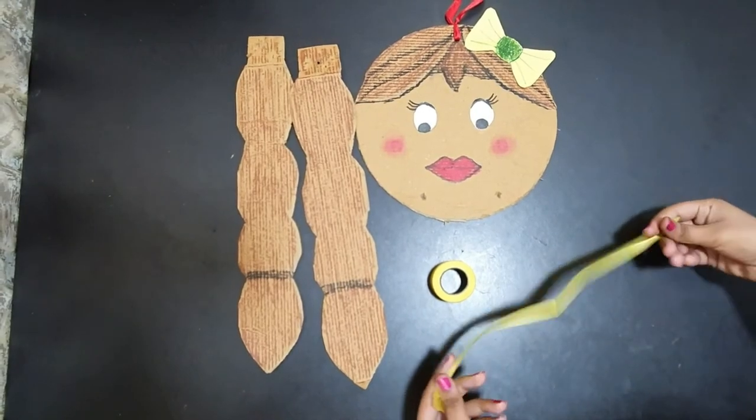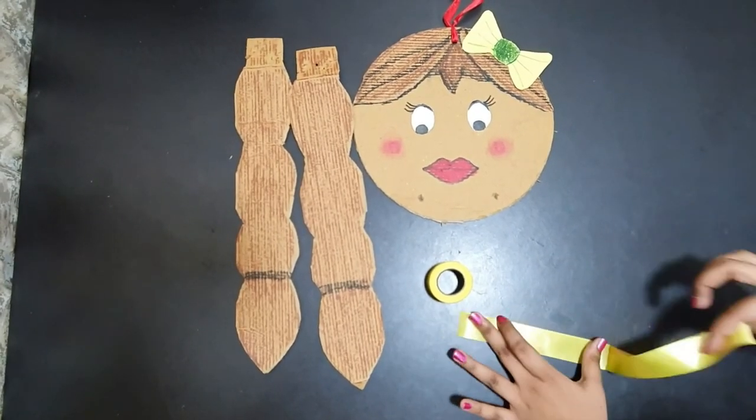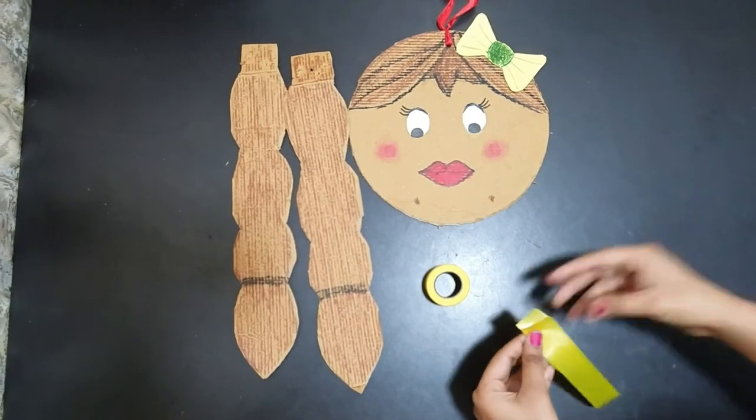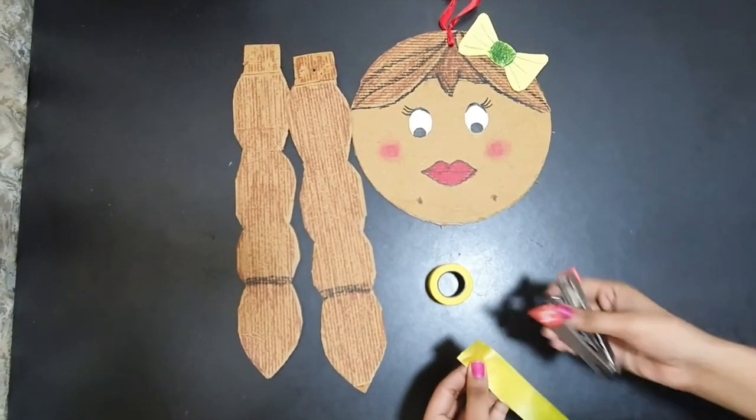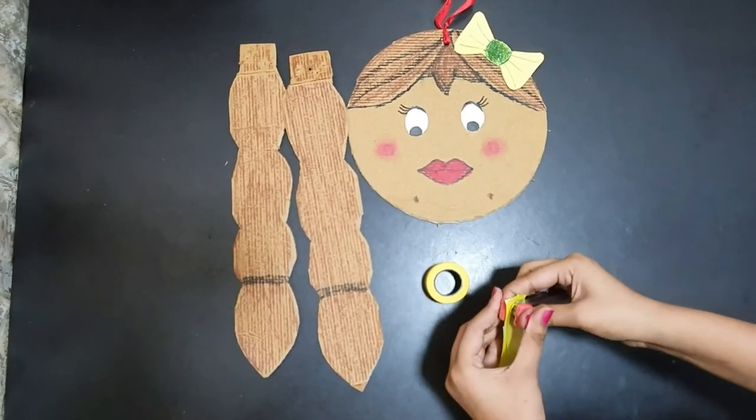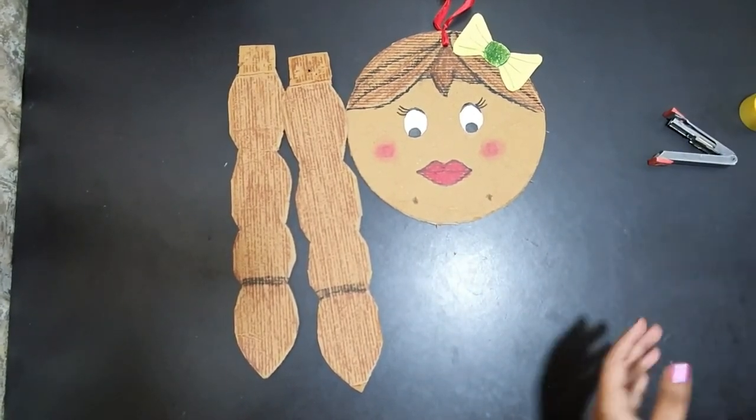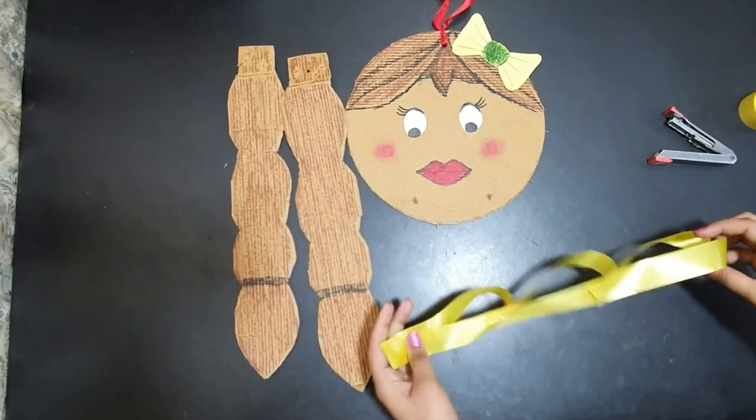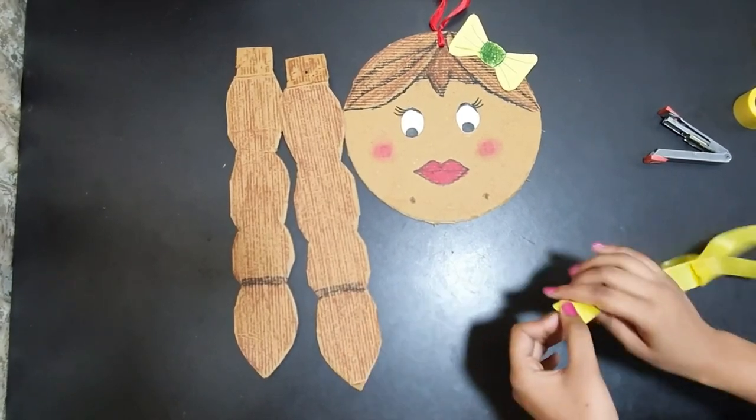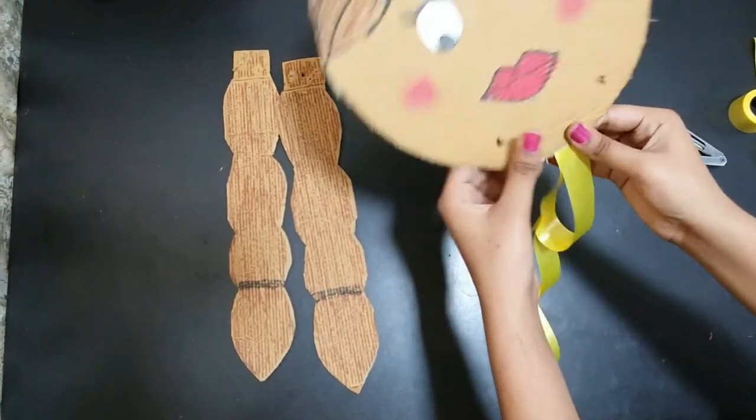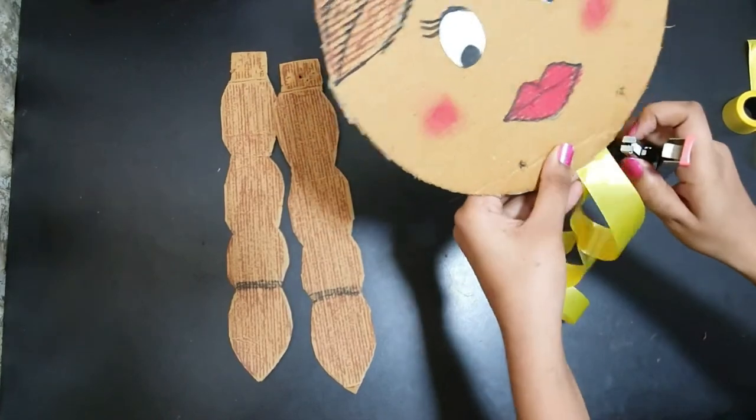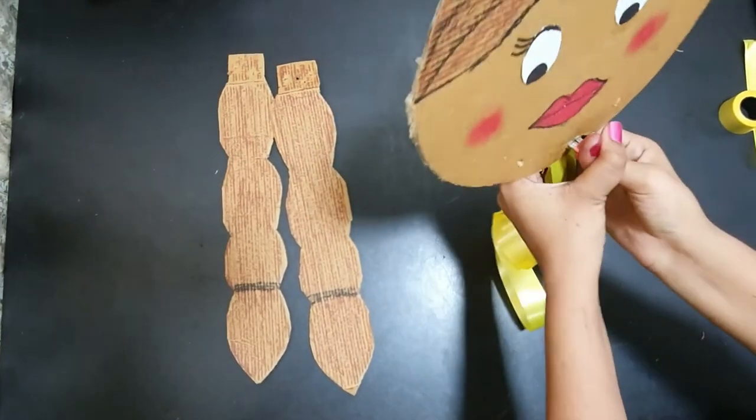I have cut a strip from this ribbon. Now we will make a drop shape and staple it like this. I have made three strips and we will attach them to the center of the face.